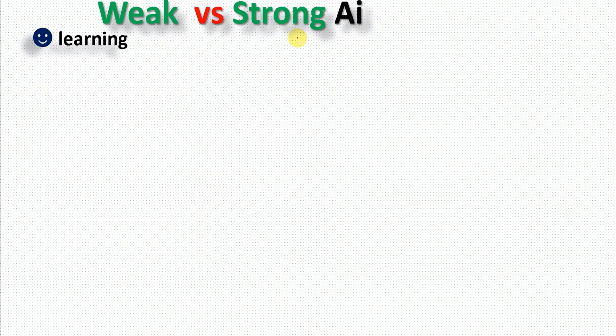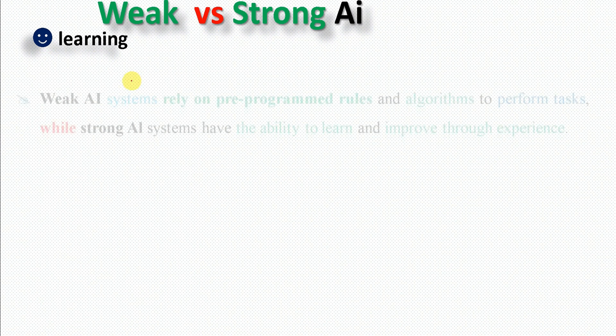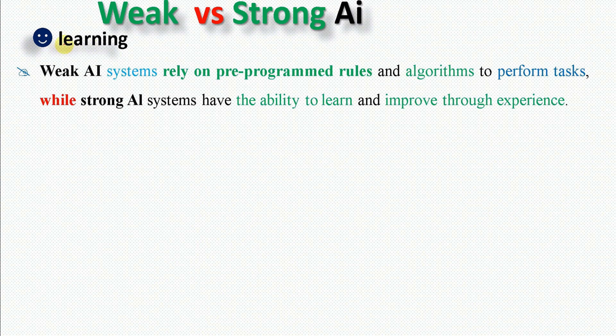The basic differences between weak and strong AI include learning, decision making, and flexibility. Weak AI uses pre-programmed rules and algorithms to perform specific tasks.